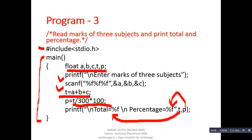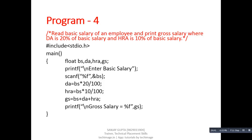In this program, DA is 20% of basic salary and HRA is 10% of basic salary. The full form of DA is Dearness Allowance and HRA is House Rent Allowance. First we read the basic salary, then calculate DA which is 20% of basic salary, then calculate HRA which is 10% of basic salary. Finally we add basic salary with DA and HRA to get gross salary.